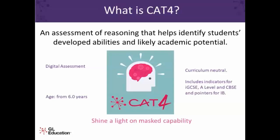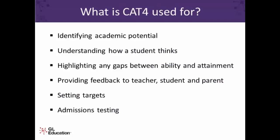What is CAT4 used for? Identifying academic potential, understanding how a student thinks, highlighting the gap between ability and attainment, seeing current attainment compared with the student's capability, and providing essential feedback to teachers, students and parents. It can be used for setting targets — those pointers and indicators can inform any target setting — and it can also be used for admissions testing.